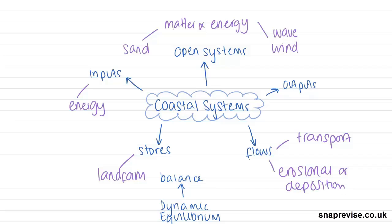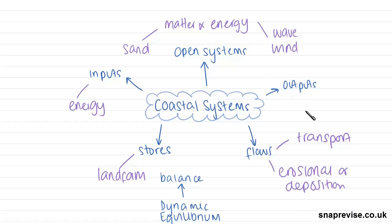It's these processes that work to create our landforms, which we will look at in later videos. Landforms of erosion are those which are being removed or degraded, and landforms of deposition is where material, sand or sediment is being deposited. Finally, the outputs we might find in a coastal system would be the accumulation of sediment or the dissipation of wave energy.